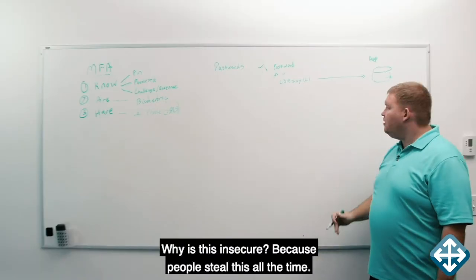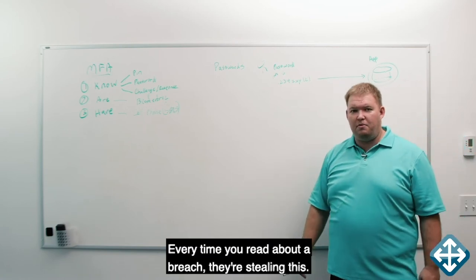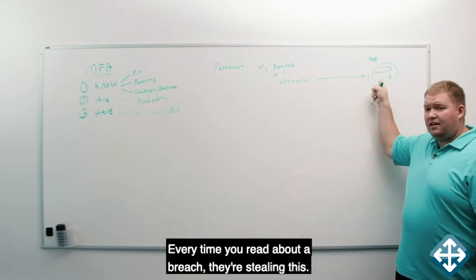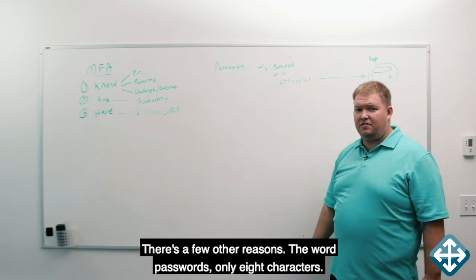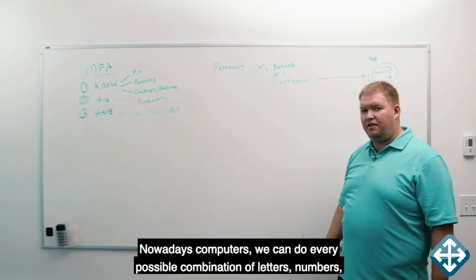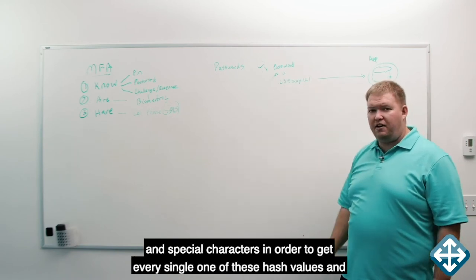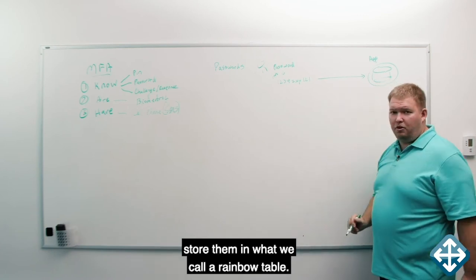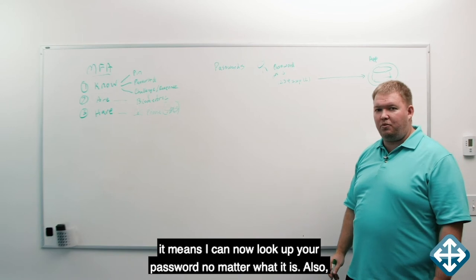Why is this insecure? Because people steal this all the time. Every time you read about a breach, they're stealing this. There's a few other reasons. The word password is only eight characters. Nowadays, computers, we can do every possible combination of letters, numbers and special characters in order to get every single one of these hashed values and store them what we call a rainbow table. When we're stored in a rainbow table, it means I can now look up your password no matter what it is.